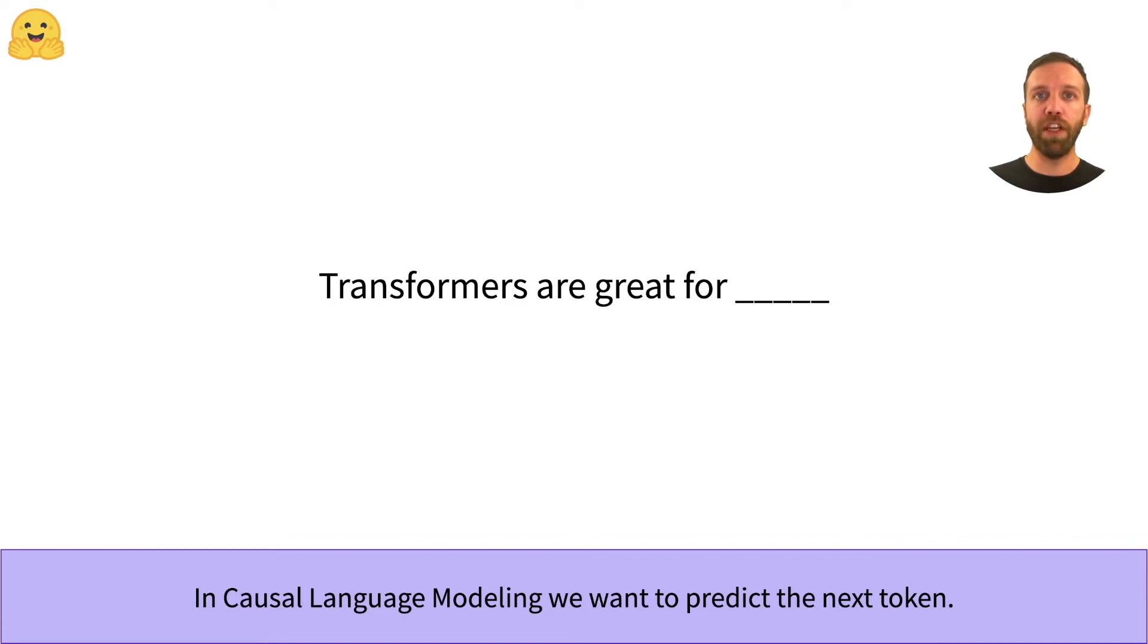In the example that you can see here, the next token could be NLP or machine learning. A popular example of causal language models is the GPT family of models.